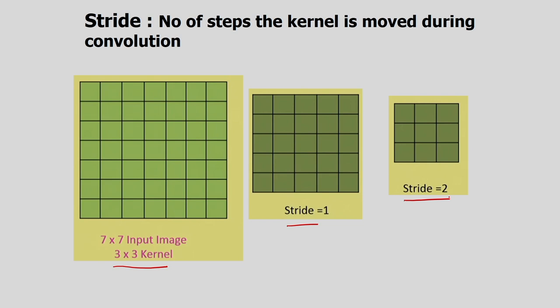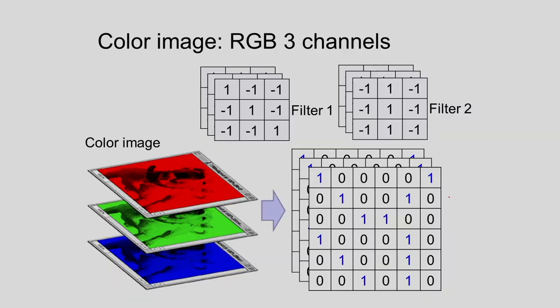For a 5×5 input image with a 3×3 filter, no zero padding, and stride 1, the output feature map size is (5 − 3 + 0) / 1 + 1 = 3×3. To apply convolution to a color image — an RGB image with R, G, and B channels — we apply filter 1 and filter 2 to all three channels, producing the corresponding feature map for the color image.